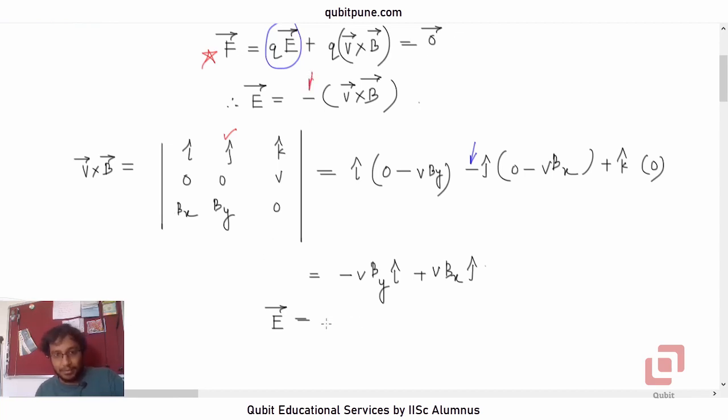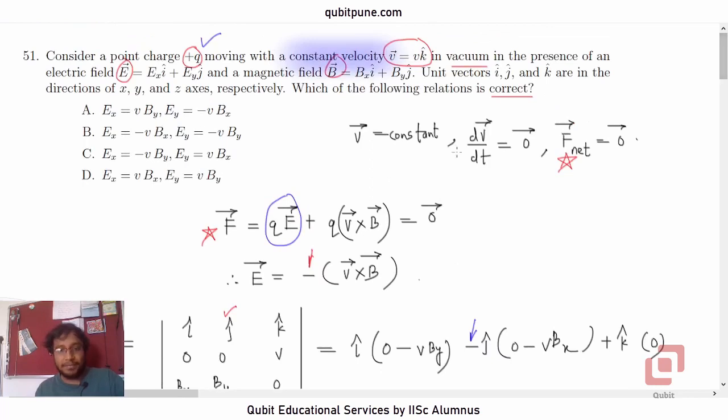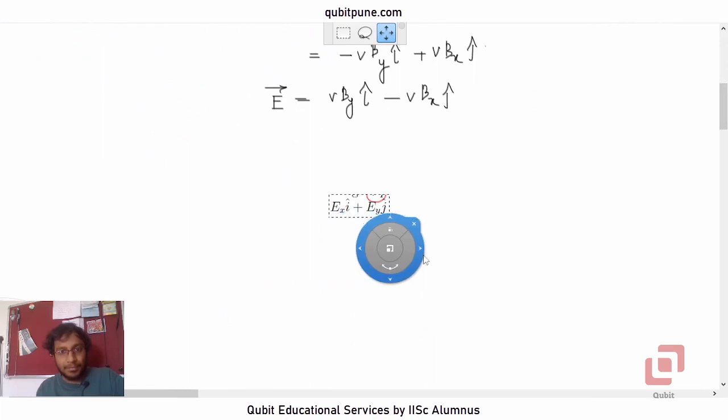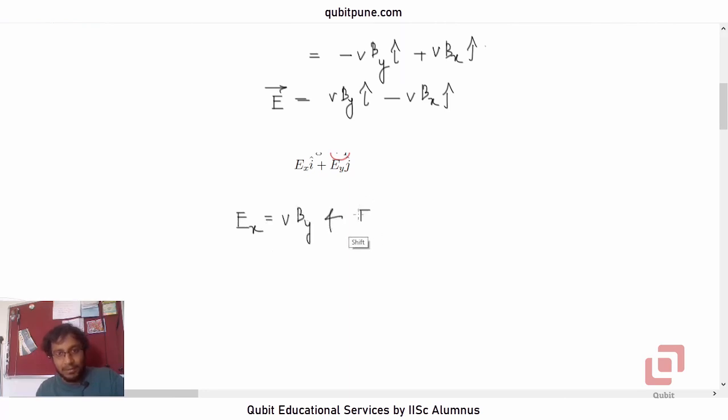So Ē = vByÎ - vBxĴ. And the electric field is Ē = ExÎ + EyĴ. Therefore, Ex = vBy and Ey = -vBx. Let us see which of the options is right.